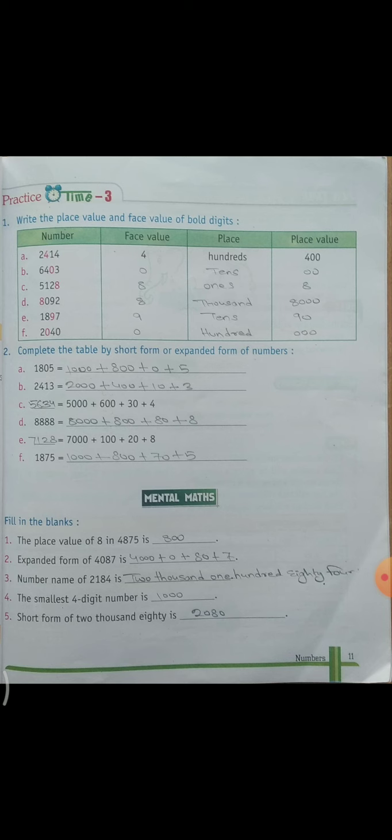Now come to question number second. Complete the table by short form or expanded form of number. Ab next question ke andar apne ko kahi ho mein short form karne hai. Aur kahi ho mein iske expanded form me likhna hai.